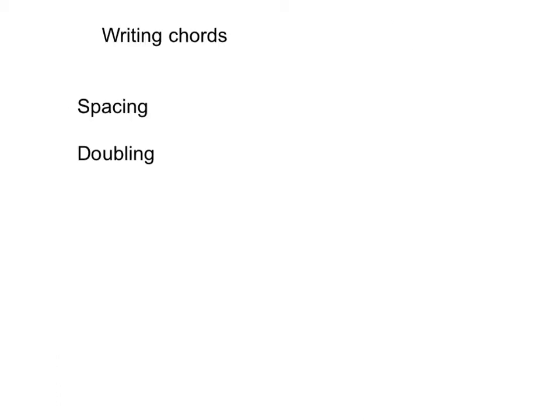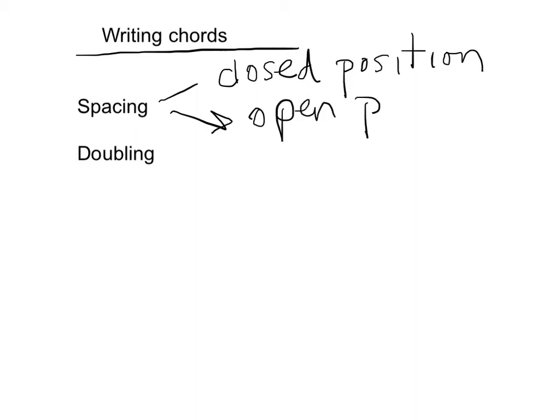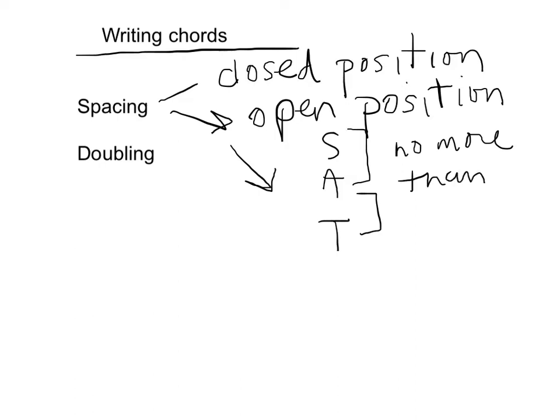Going on to the next slide, we have a few things we keep track of as we write these sonorities. One is how they're spaced, and here we have an option of putting them in closed position. This is putting them as tight as possible. Another is a variety of open positions, so that there might be some space between the alto and the tenor, or the tenor and the bass. The third thing we want to remember is that between the soprano and the alto, and the alto and the tenor, no more than an octave. That'll help us make nice, great-sounding chords, just like we heard and sang in the Bach just a few minutes ago.